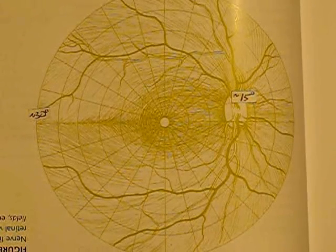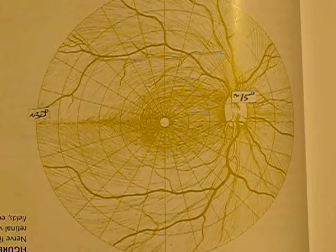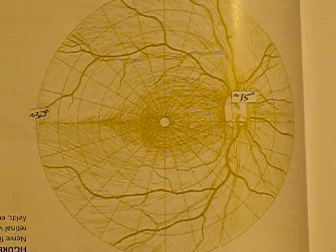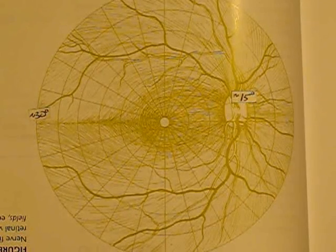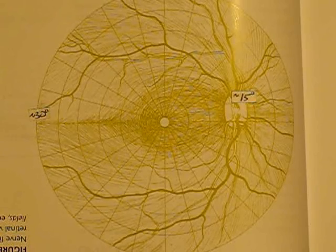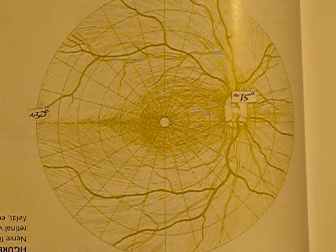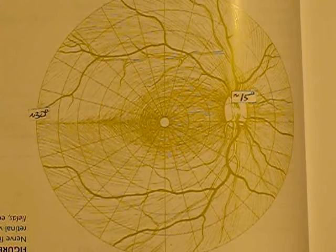The point I was making is, can we predict the area of rim thinning on an optic nerve based on the location of a visual field defect, or vice versa? Can we predict the location of a visual field defect based on where the rim is thinning?